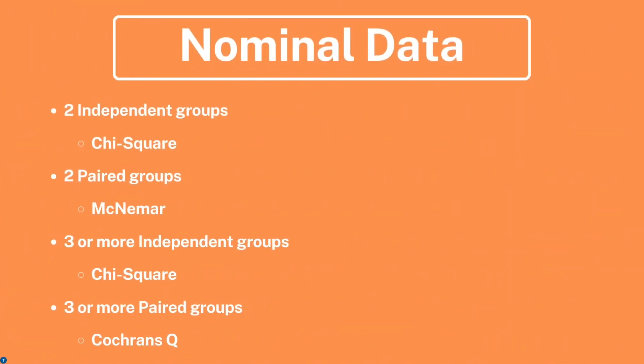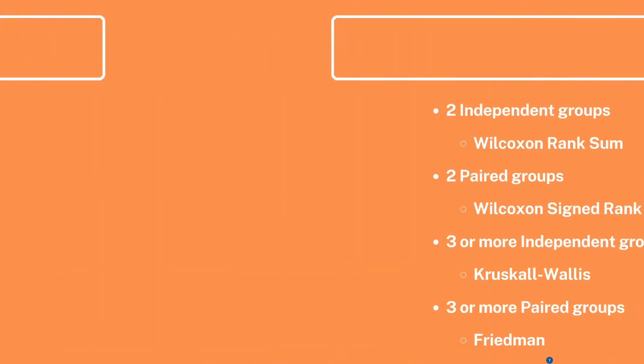For nominal data: if you have two independent groups, you would use a chi-square; two paired groups, McNemar; three or more independent groups, chi-square; three or more paired groups, Cochran's Q.